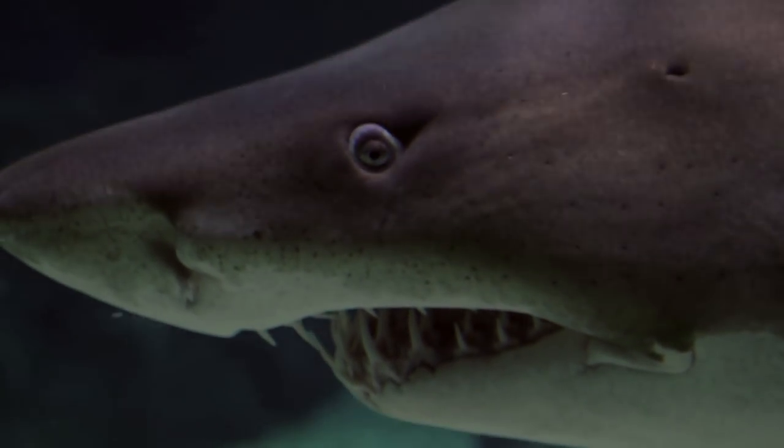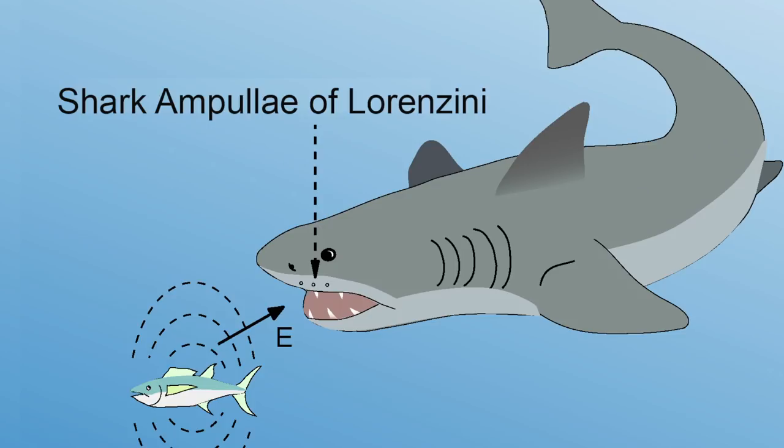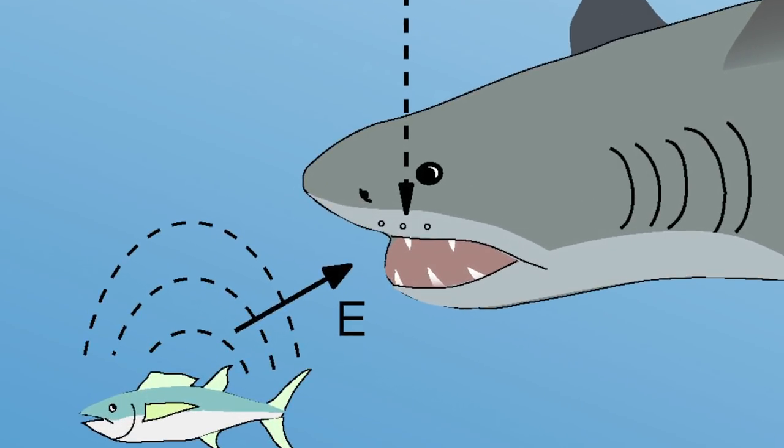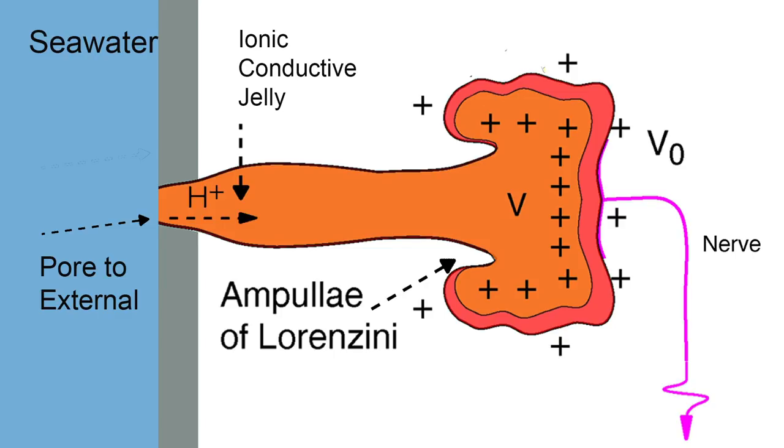Sharks have very sensitive electroreceptors called ampullae of lorenzini. The shark can sense small electric fields in the water, and this happens because ions from the water are able to pass into its organ.